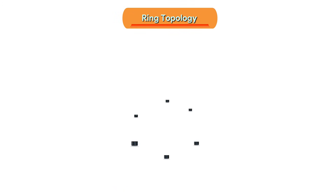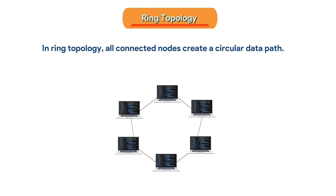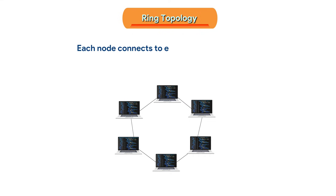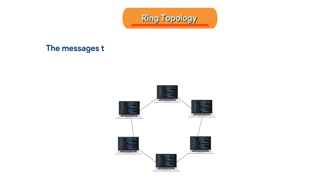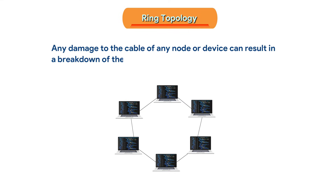In Ring Topology, all connected nodes create a circular data path. Each node connects to exactly two other nodes. Messages travel in a clockwise or anti-clockwise direction. Any damage to the cable of any node or device can result in a breakdown of the entire network.